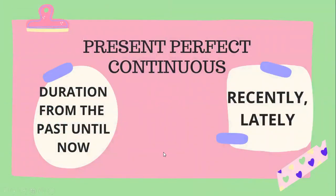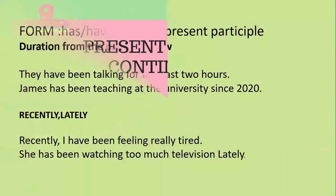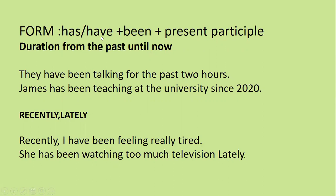Then comes present perfect continuous. When to make use of it? For actions which began in the past but which are still continuing and shall continue for some time. You can also use the words 'recently' or 'lately.' The sentence structure is: has/have plus been plus present participle. We use it to show that something started in the past and has continued until now — for five minutes, for two weeks, since yesterday are all durations used with this tense.